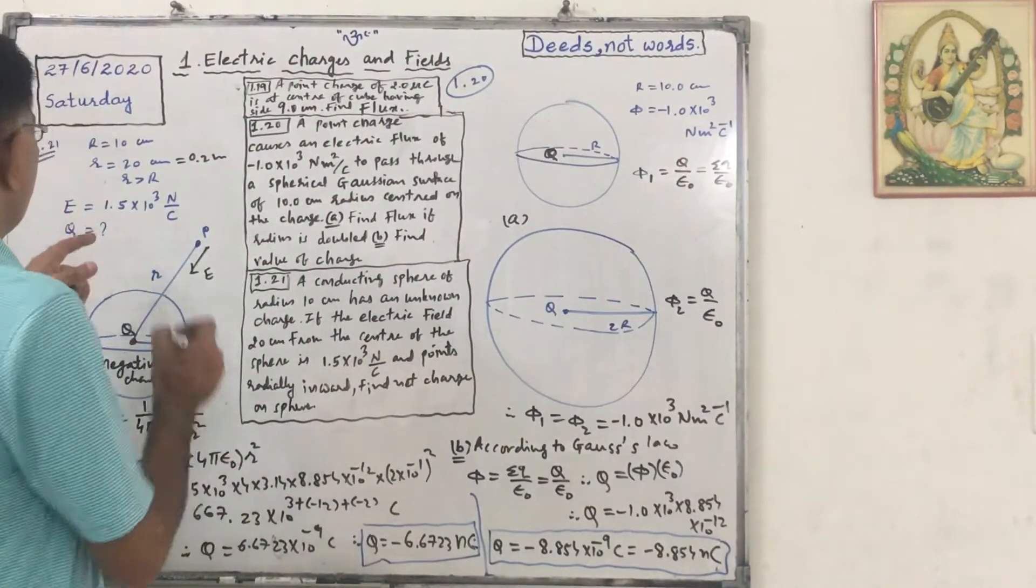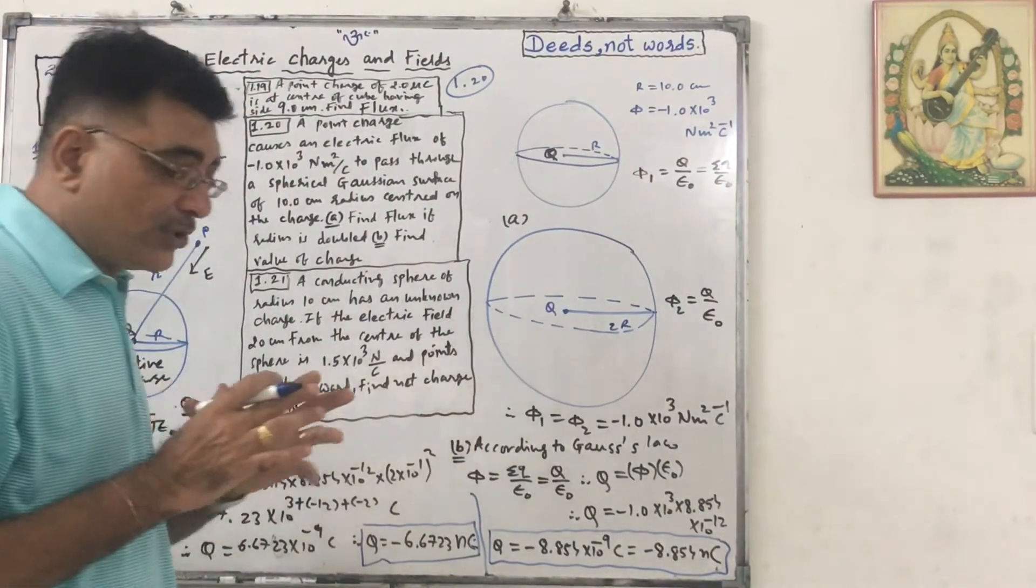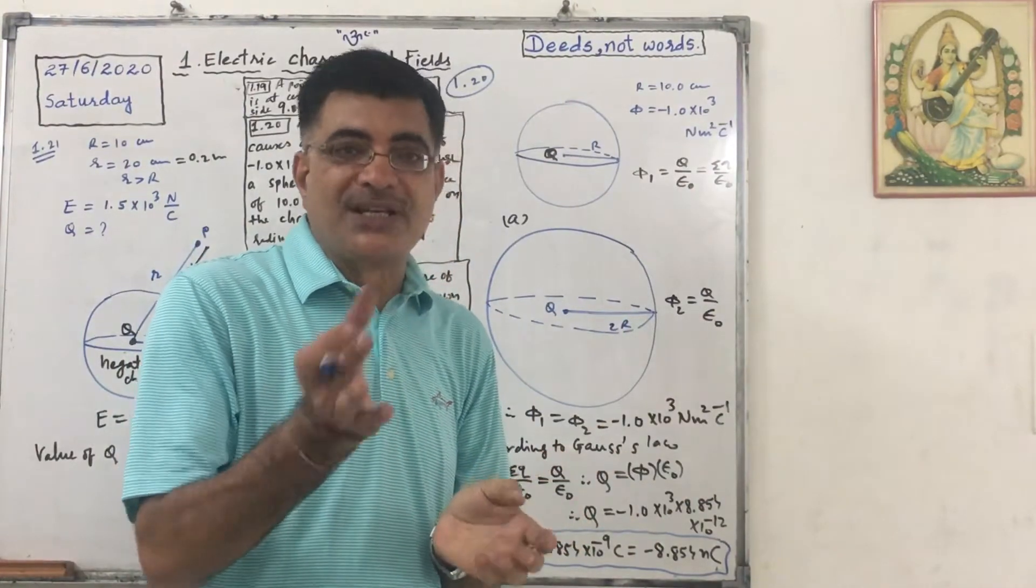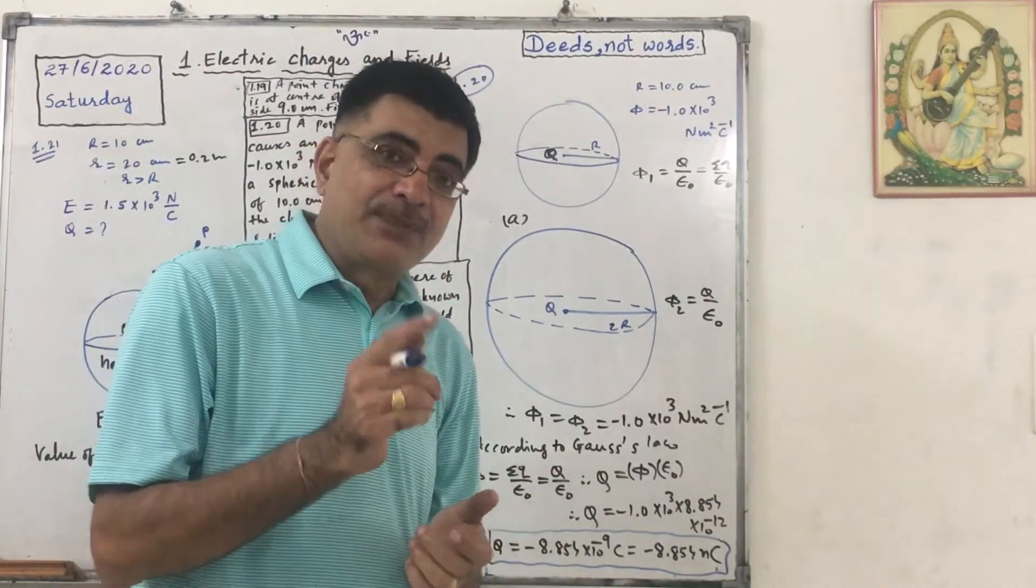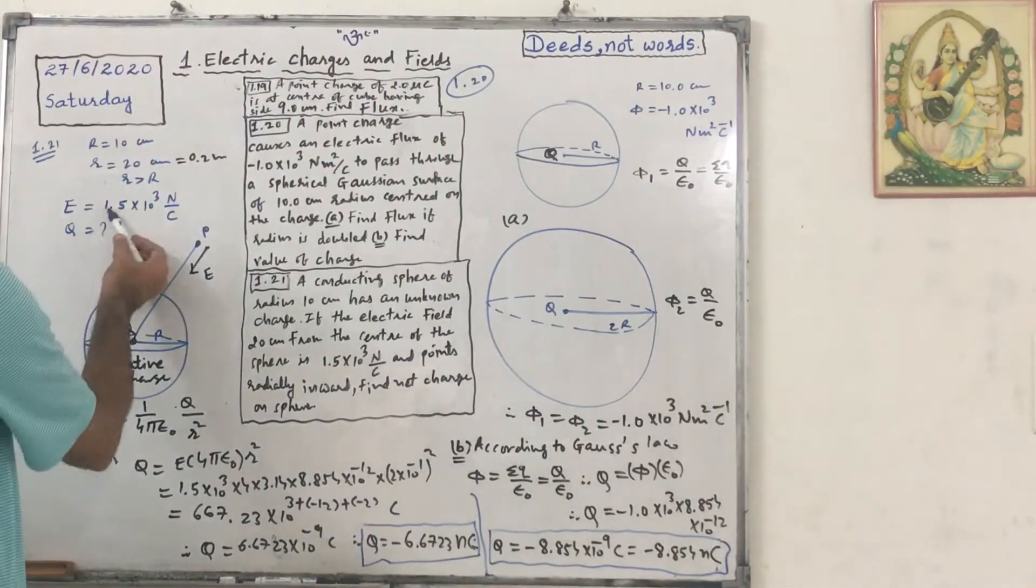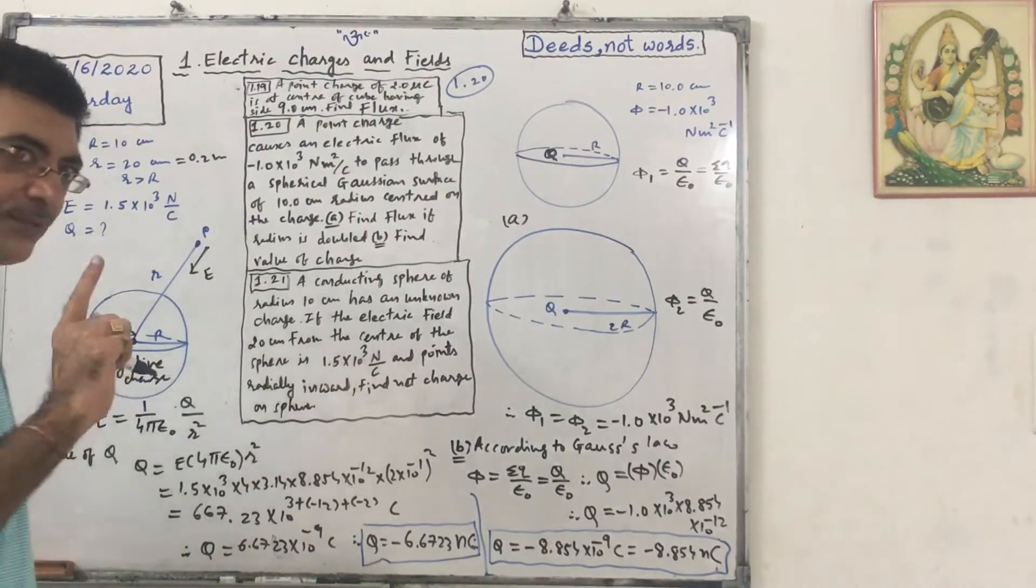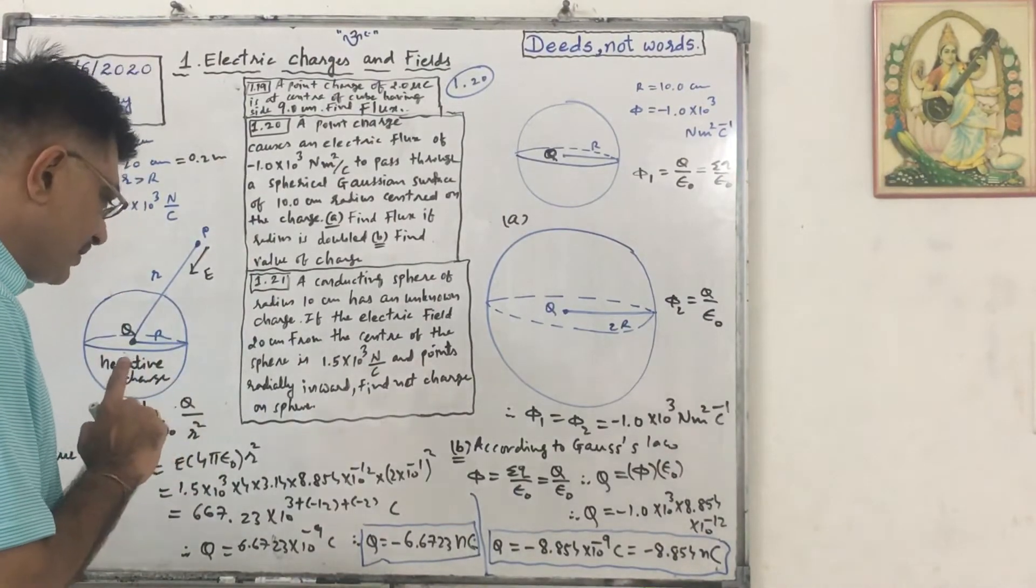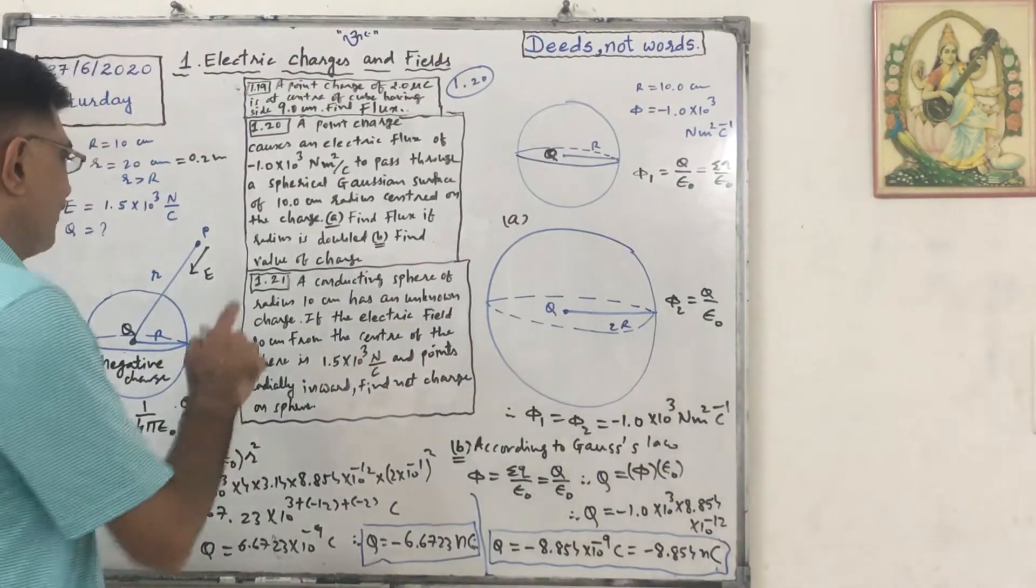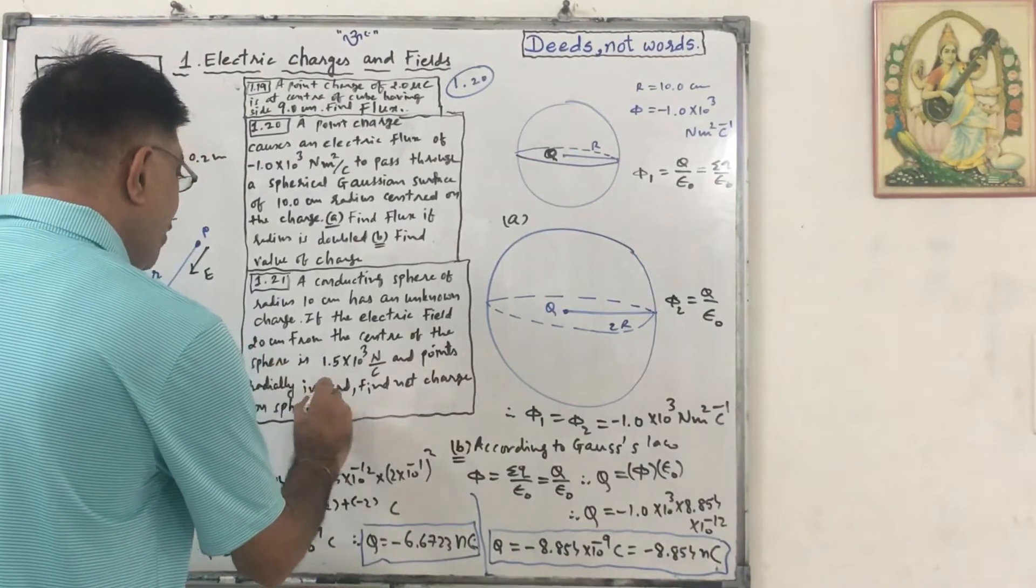We know that for outside point the sphere behaves like a point charge, and that point charge we can consider at the center of the sphere. So E is given and we have to find Q. First we will find magnitude of Q, then we will give negative sign to it because they have given that it is radially inward.